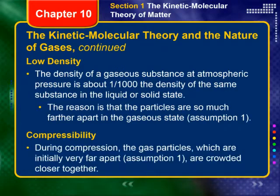Moving on to density. The density of a gaseous substance at atmospheric pressure is about one one-thousandth the density of that same substance in the liquid or solid state. When water transitions from liquid to steam, there's an expansion on the order of about a thousand times — you have the same mass but the volume increases a thousandfold — resulting in incredibly low density. We can explain this because of assumption one: gas particles are so far apart from one another that the actual particle size is negligible.